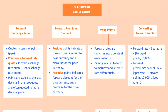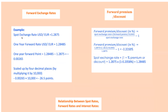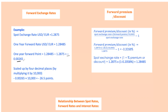Now let's talk about forward exchange rates, which are usually quoted in points or pips. The points are the difference between the forward rate and the spot rate. These points are adjusted to match the last decimal place of the spot quote. For example, if the spot exchange rate for USD per euro is 1.2875 and the one-year forward rate is 1.28485, the forward point is minus 0.00265. You scale this by four decimal places, multiplying by 10,000 to get minus 26.5 points.